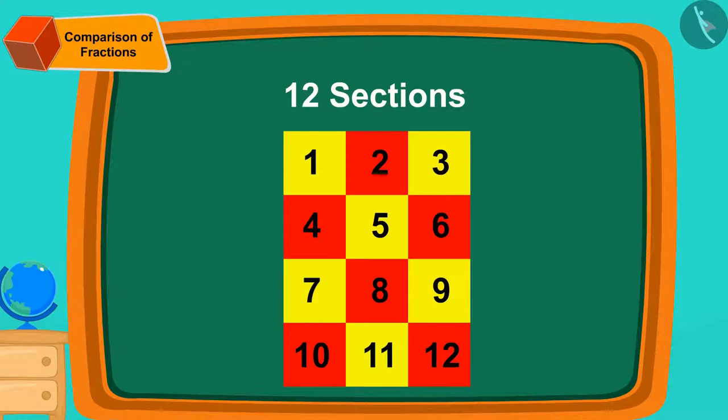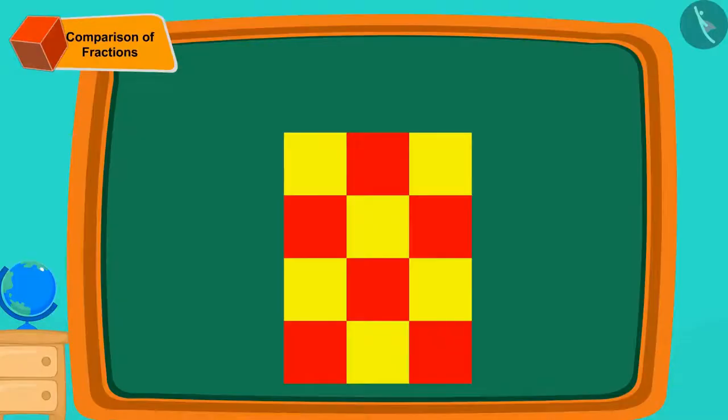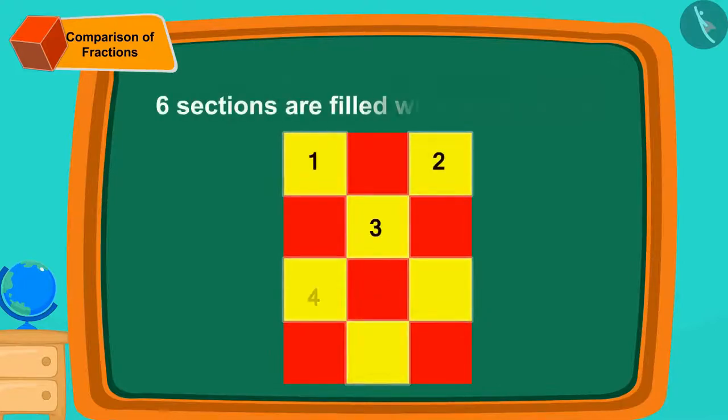Now, can you tell how many yellow-colored sections are there in the design on Golu's cloth? If you wish to, you can stop the video and find the answer. Yes, in Golu's design, 6 sections are filled with yellow color.